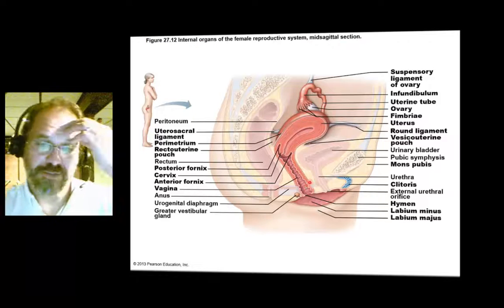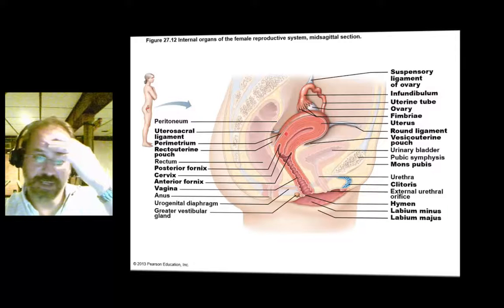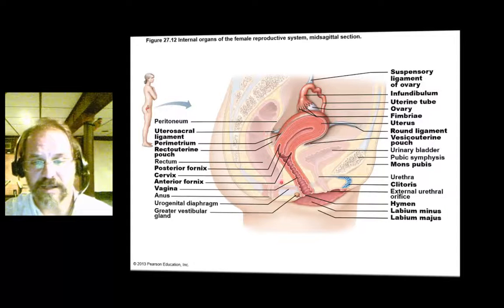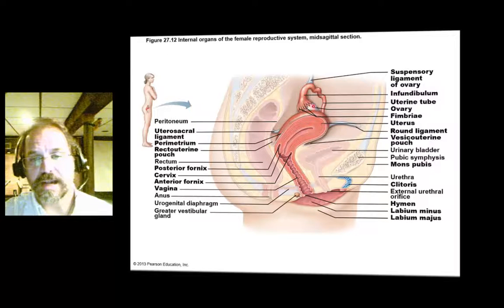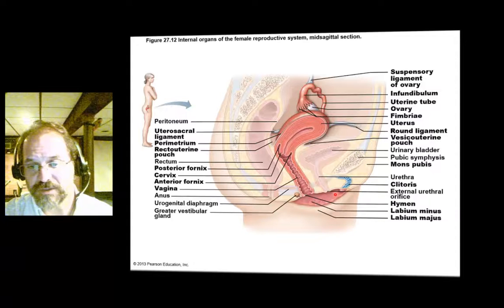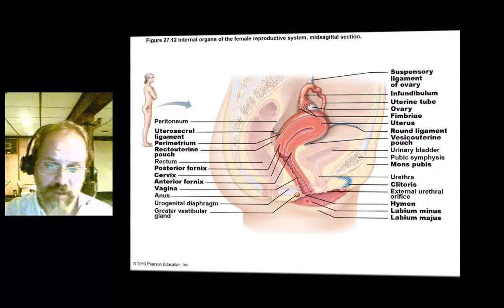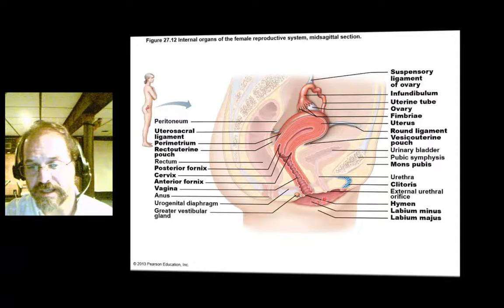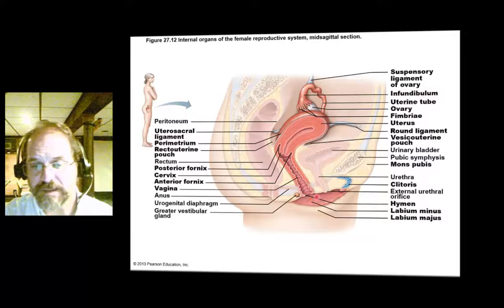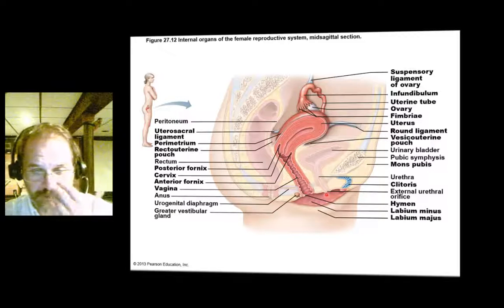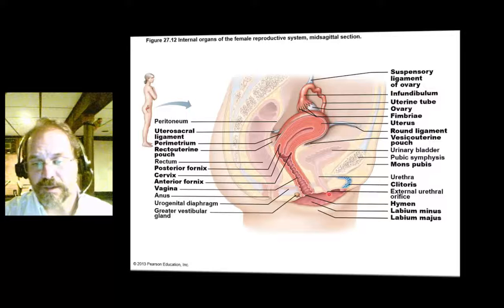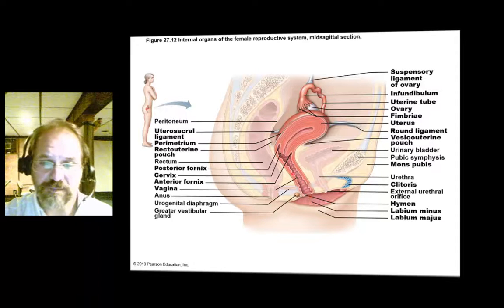Here we have a sagittal section of the female reproductive tract, with digestive and urinary structures grayed out in the background — the rectum and urinary bladder. The reproductive structures include the external genitalia: the labia majora, the big fleshy fold, and a thinner mucus-secreting layer called the labia minora deep to that. There are two openings in the pudendal cleft. The more anterior opening is the urethra leading to the urinary bladder, and posterior to that is the larger opening to the vaginal canal.